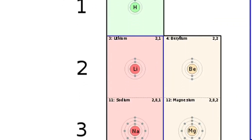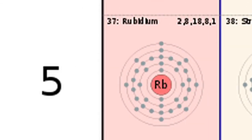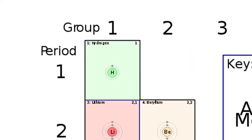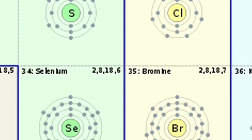The row number corresponds to the number of rings in each atom, such as rubidium which has five rings. The column or group number corresponds to the number of dots on the outside rings, also known as valence electrons.